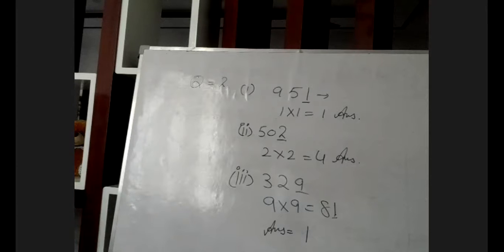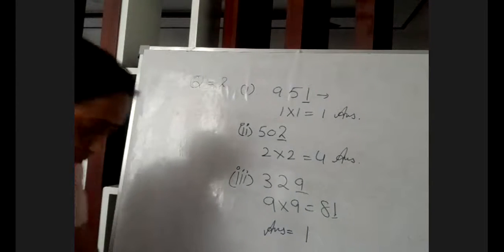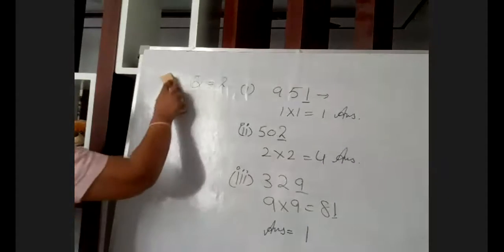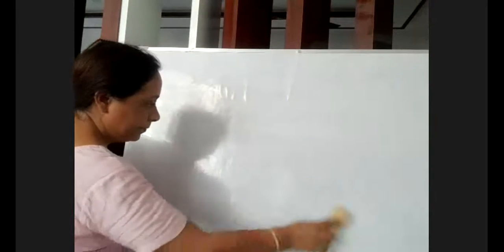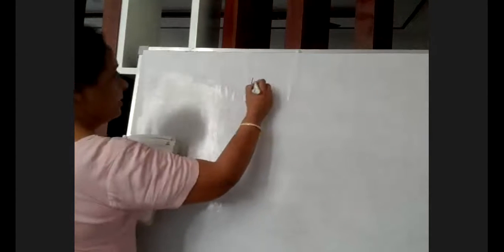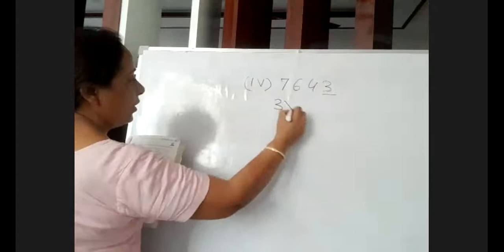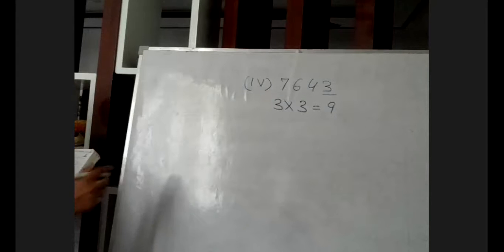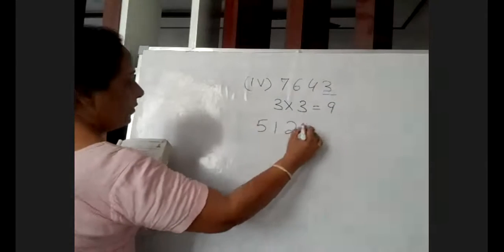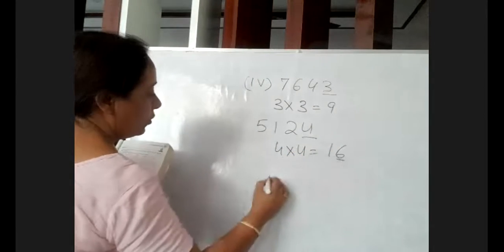Fourth: 7,643. At the units place we have 3. Three into three is nine, so the answer is 9. Last one: 5,124. At unit place we have 4. Four into four is 16, so your answer is 6.